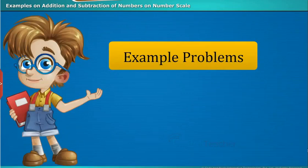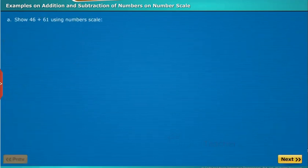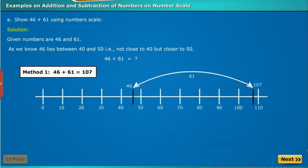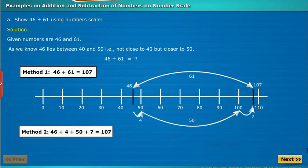Let us see some examples on addition and subtraction of numbers using number scale. Show 46 plus 61 using number scale. The given numbers are 46 and 61. As we know, 46 lies between 40 and 50 — not close to 40 but closer to 50. For method 1, as with the beads Mala, we count them on the number scale for addition. For method 2, we split 61 as 4 plus 50 plus 7. Thus, we do the addition as 46 plus 4 plus 50 plus 7, which equals 107.